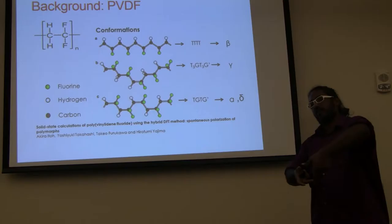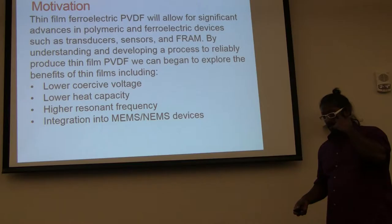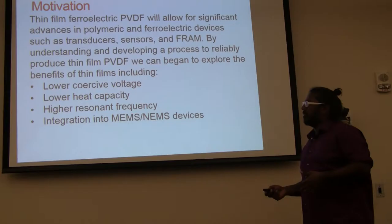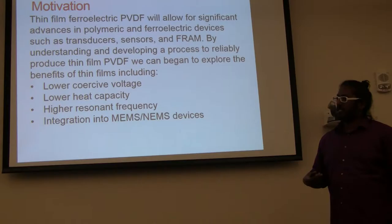And so why do we want thin films? When you have a thin film, you get properties that are advantageous for devices. For example, you get a lower heat capacity. So the heat sensors that I was talking about, the light sensors that I was talking about earlier, are much faster and more sensitive.